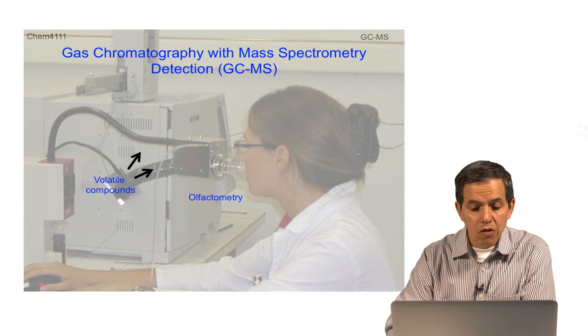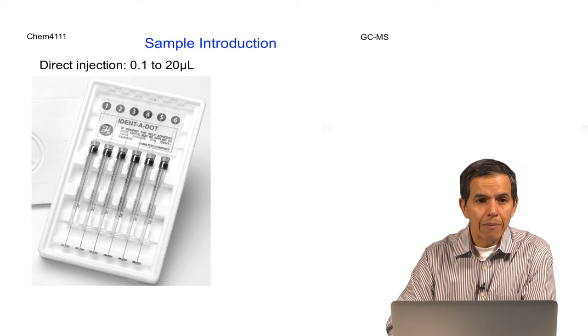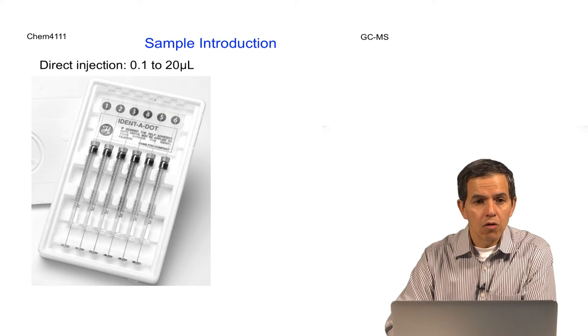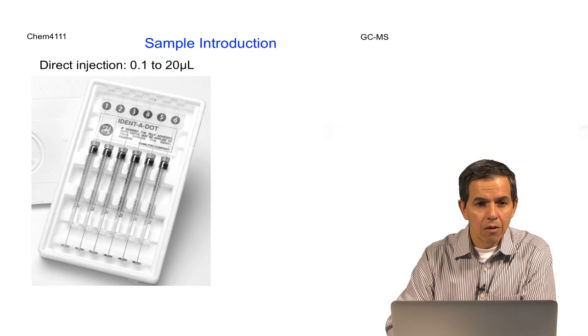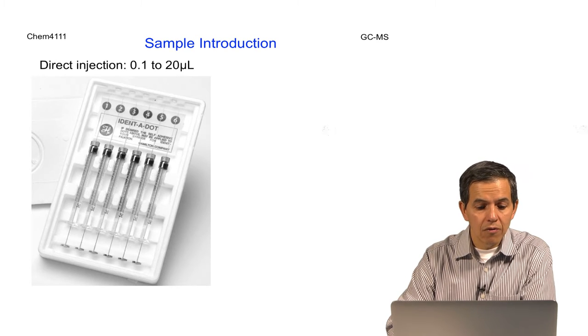In order to use this technique, one of the first things to do is introduce the sample. The sample is usually introduced by using a syringe that could either contain a gas or a liquid. It could also be introduced using a syringe in which a fiber made of polymeric material has entrapped or absorbed the analyte or analytes of interest.